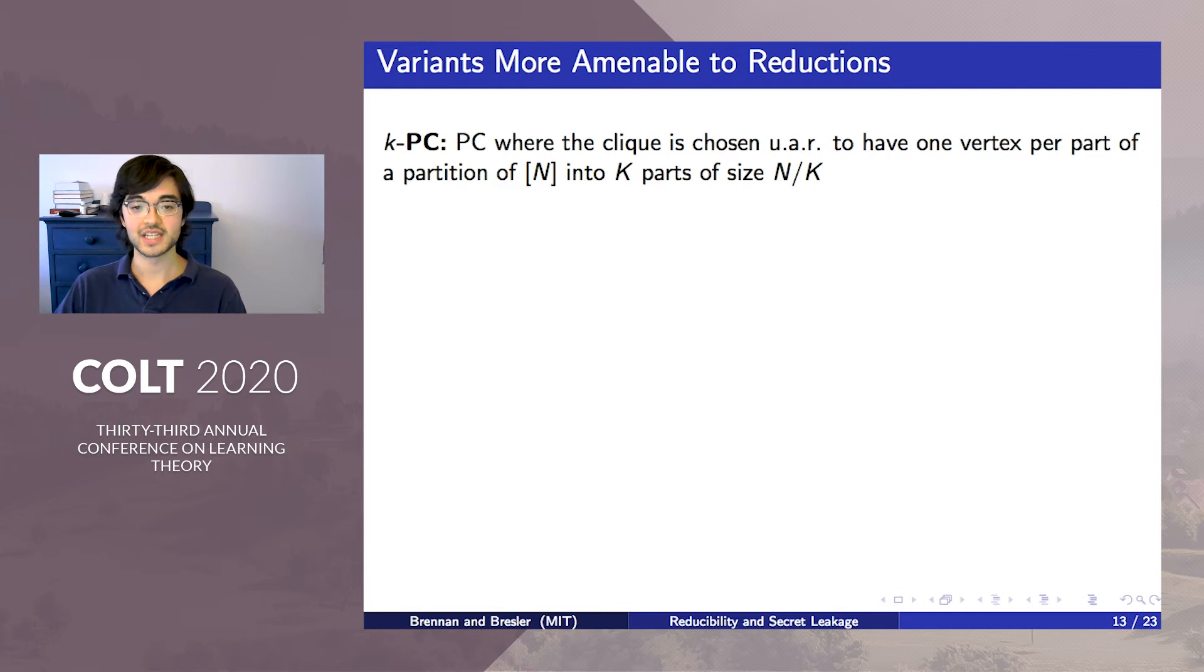Our main contribution is a set of average case reduction techniques that leverages structure in slight modifications of PC. We introduce four natural variations on the PC conjecture, which imply all our lower bounds and turn out to be much more useful in average case reductions.